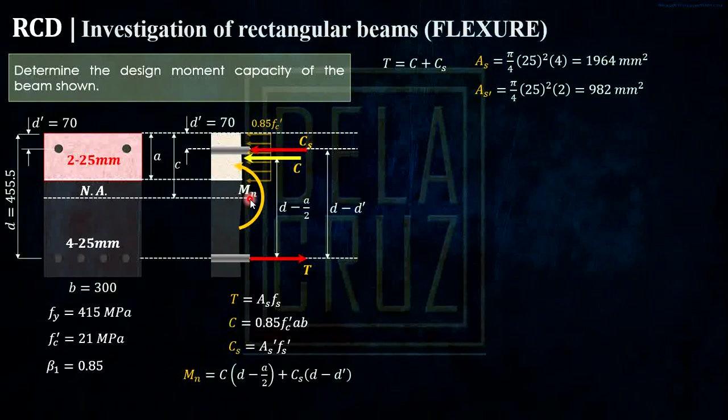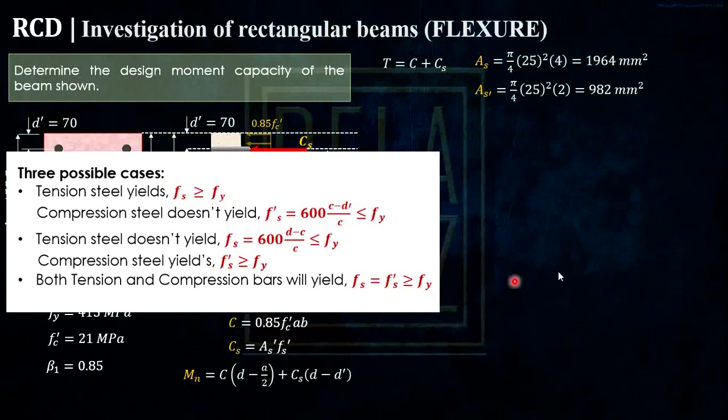So there are 3 cases possible to happen here. This is the 3 possible cases. So the tension steel yields. So FS should be greater or equals to FY. And the compression steel doesn't yield. So ito yung FS prime that we'll use, the actual formula. So that should be lesser to this FY.